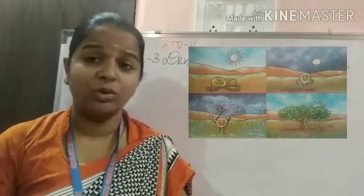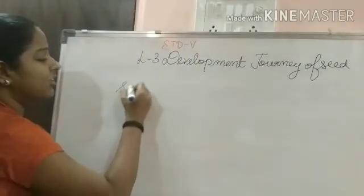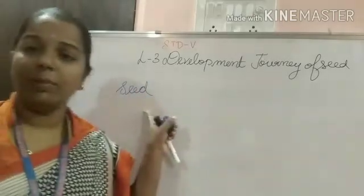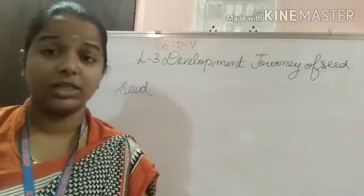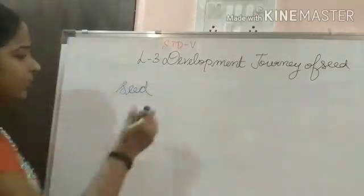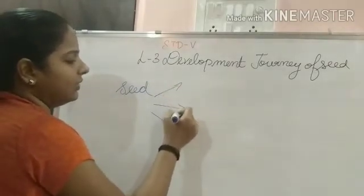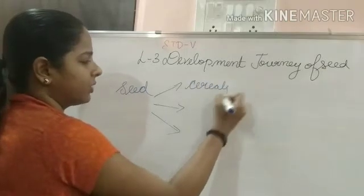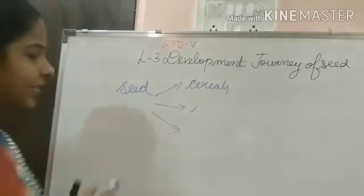Before going to the seed, what is a seed? A seed is the thing from which a new plant is grown. Plants produce seeds, and those seeds grow into new plants. These seeds are divided into three categories.